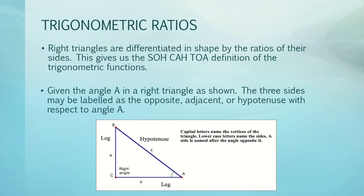Right triangles are differentiated in shape by the ratios of their sides, which gives us the SOH-CAH-TOA definition of the trigonometric functions. Suppose we have angle A in a right triangle — the three sides may be labeled as opposite, adjacent, or hypotenuse with respect to angle A. In our figure, with respect to angle A, the side opposite our angle A is called the opposite side, and the other leg is called the adjacent side.